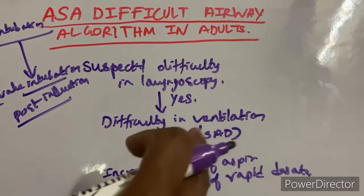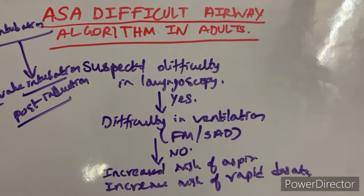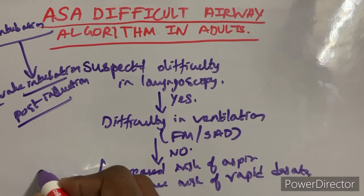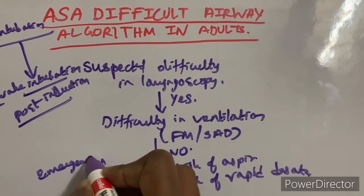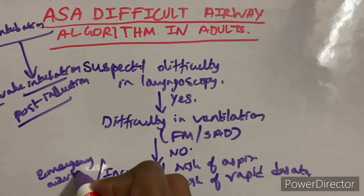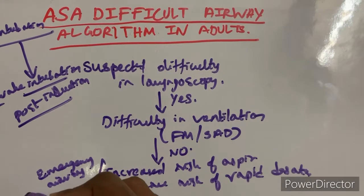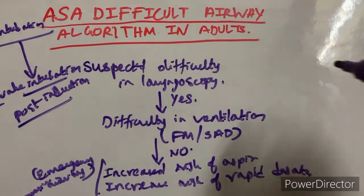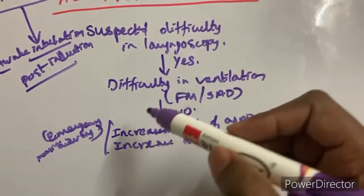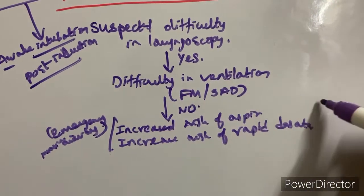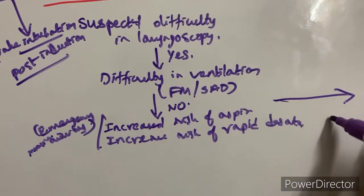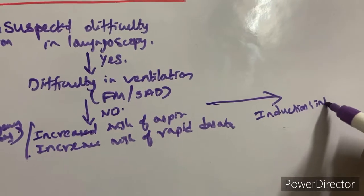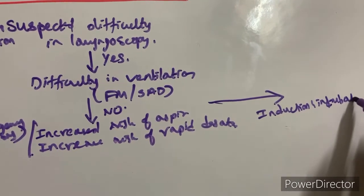If suspected difficulty in laryngoscopy is present, also look for difficulty in ventilation with face mask or supraglottic airway device, increased risk of aspiration, increased risk of rapid desaturation, or emergency airway requirement. If none of these are present — only difficulty in laryngoscopy — you can proceed with post-induction intubation strategy.